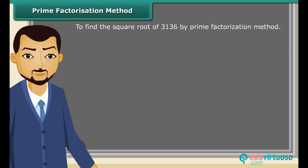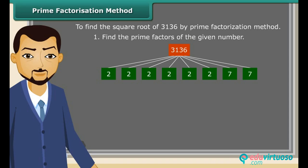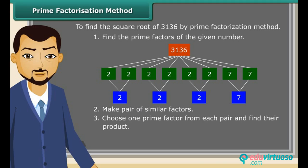Now, we will try to find the square root of a number by prime factorization method by following some steps. First of all, find the prime factors of the given number. Now, make pair of similar factors. After that, choose one prime factor from each pair and find their product. So the product thus obtained is the square root of the given number.